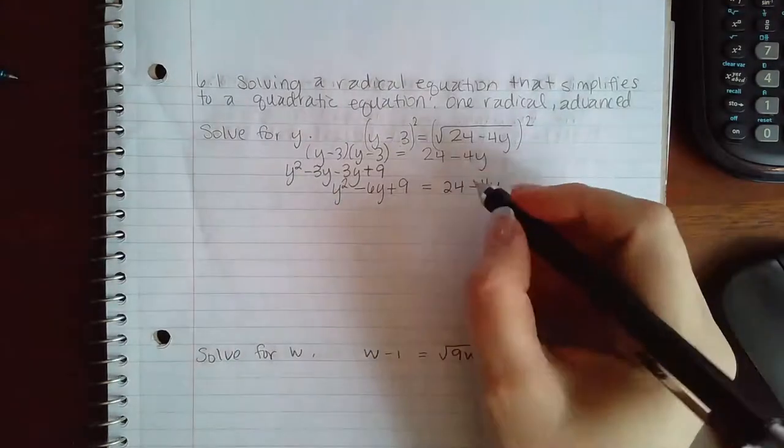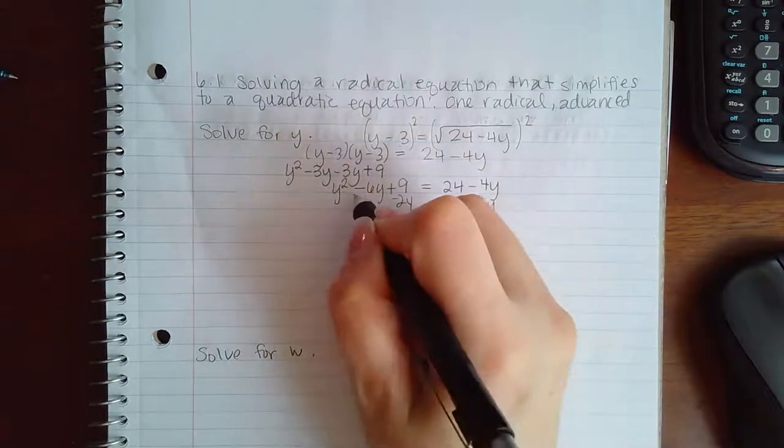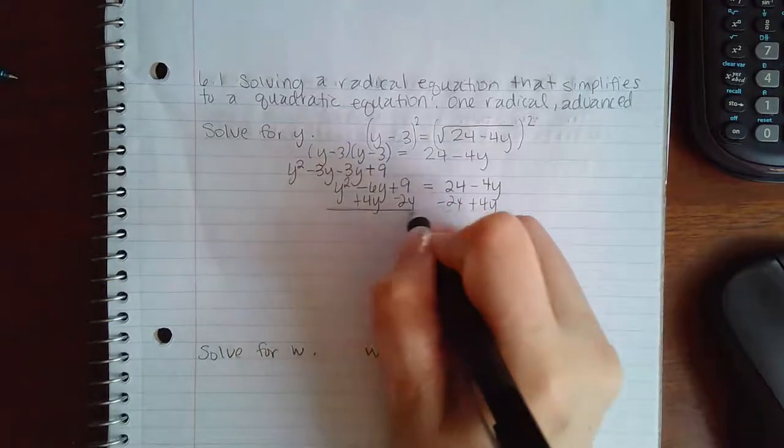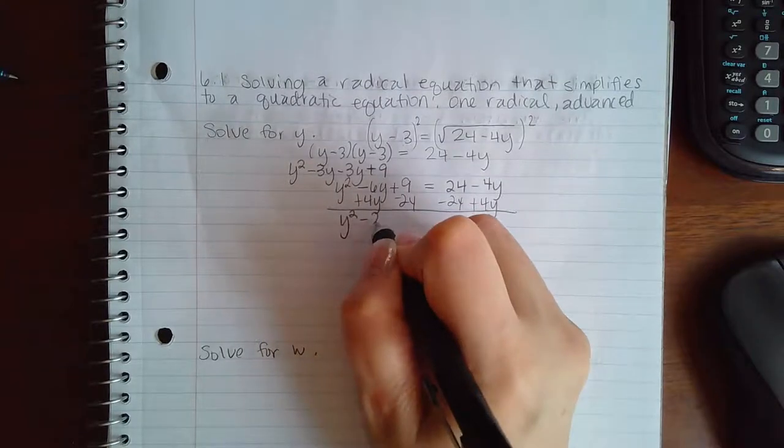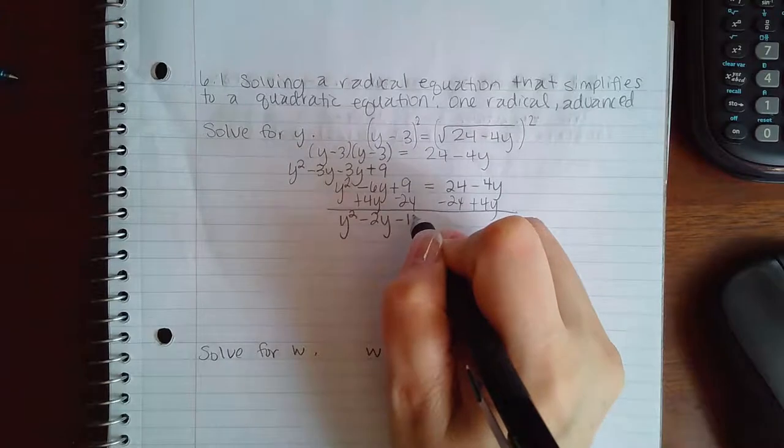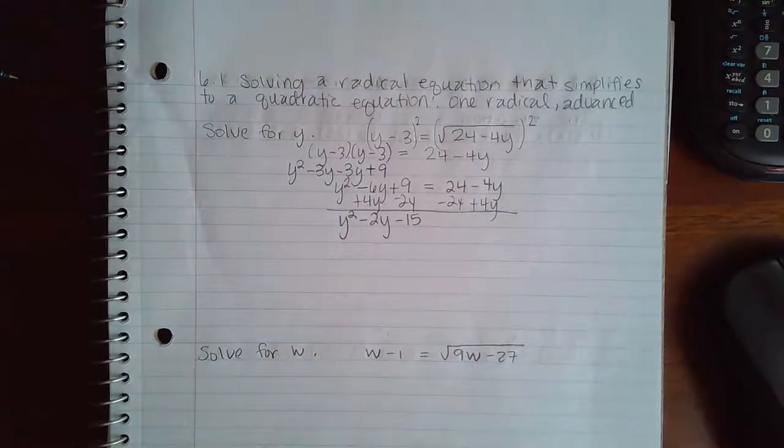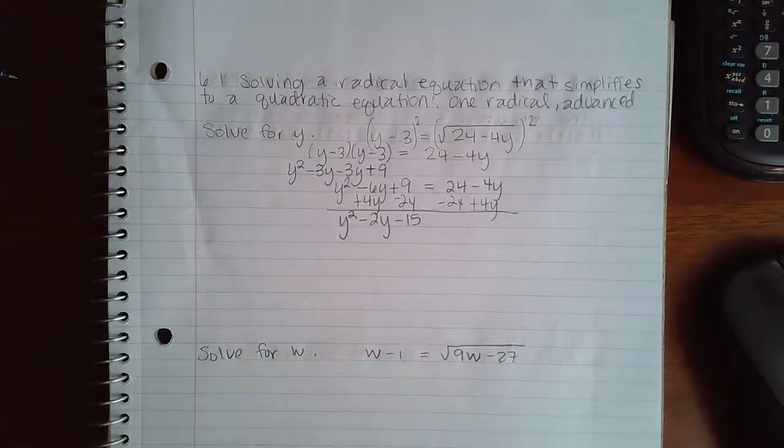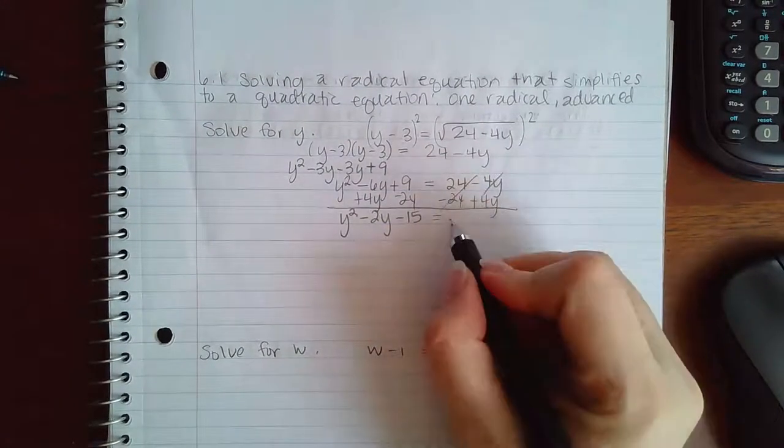So I am going to minus 24 on both sides of my equation and add 4y to both sides of my equation. What I get left over is y squared minus 2y minus 15. Let me make sure because my brain does funny stuff after I've been doing calculus all day. Yes, negative 15 and these two wipe out and I get 0.